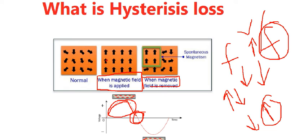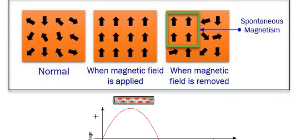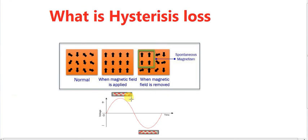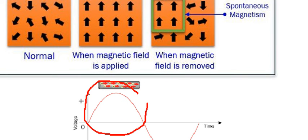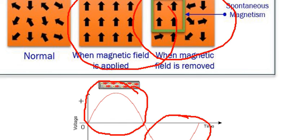Why do we say hysteresis losses are constant losses? That is why we say hysteresis loss is a constant loss. If you change in an alternating current, you will increase the friction. So the hysteresis losses are very fast. We have a hysteresis loss, and these are constant losses.